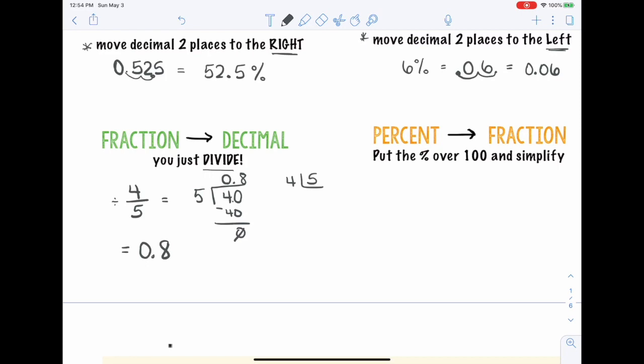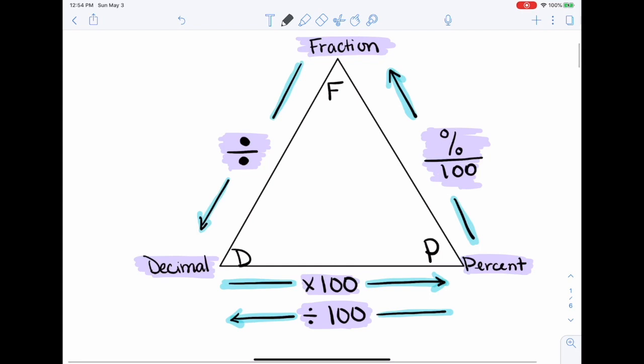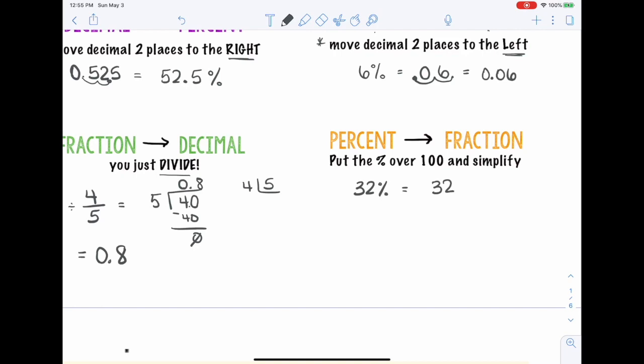Si quiero cambiar un porcentaje a fracción. Okay, let's say I have 32%. Acuérdese, going back to the triangle, from percent to fraction, ponemos el porcentaje sobre 100. 32 sobre 100. Usted va a notar que no voy a usar el símbolo del porcentaje. I'm just going to write 32 over 100. Y ahora tengo que simplificar. Entonces, vamos a dividir aquí cuál número va entre los dos. And that's four. Entonces, su resultado va a ser 8/25.